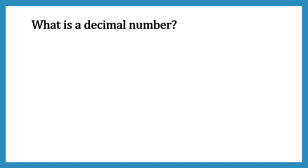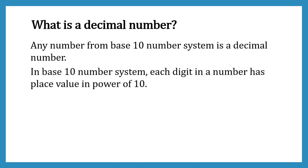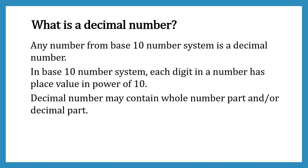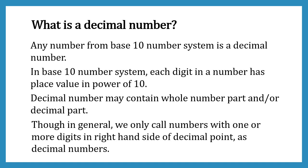Before starting, let's see what is a decimal number. Any number from the base 10 number system is a decimal number. In base 10, each digit in a number has a place value in powers of 10. A decimal number may contain a whole number part and/or a decimal part. In general, we only call numbers with one or more digits on the right-hand side of the decimal point as decimal numbers.